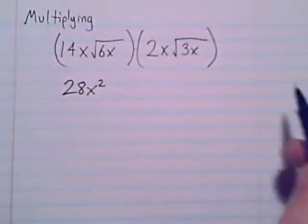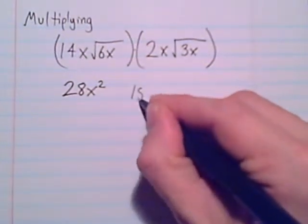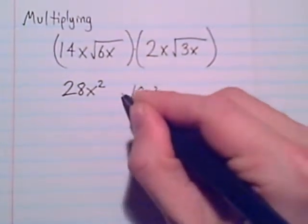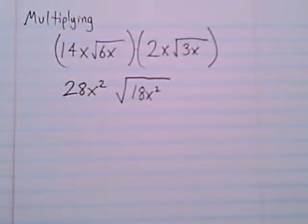So outsider with outsider multiplied together. The insiders, we can multiply those together. The 6x times the 3x, 18x squared. But since they were inside a radical, that product needs to stay inside of a radical. So the first step of our multiplication has taken us to 28x squared times radical 18x squared.